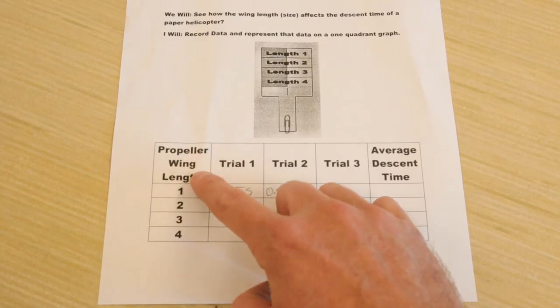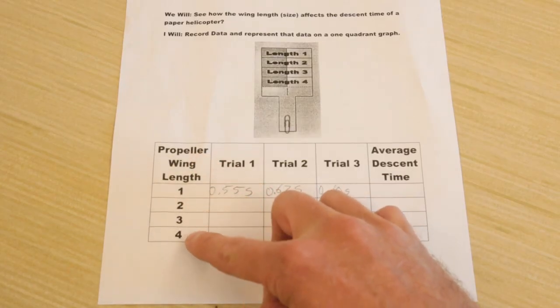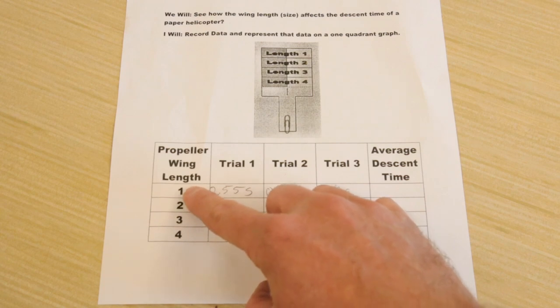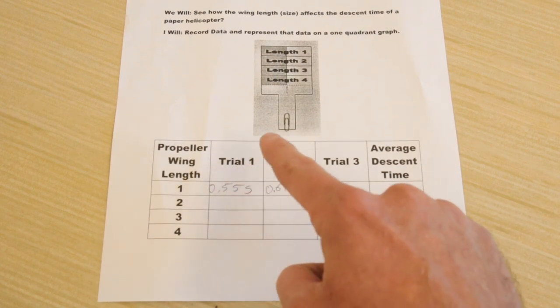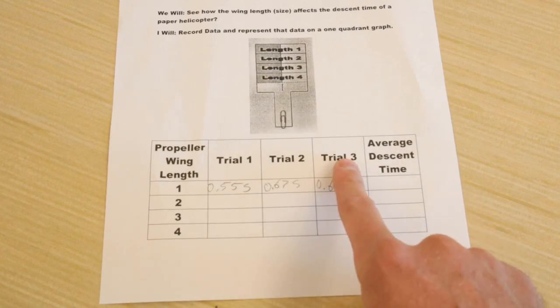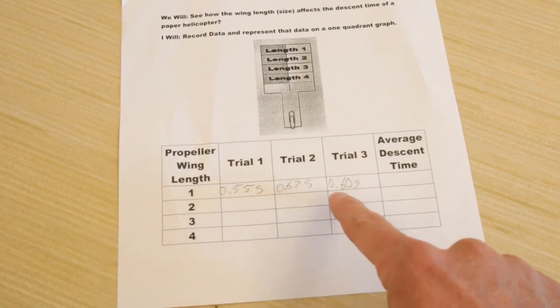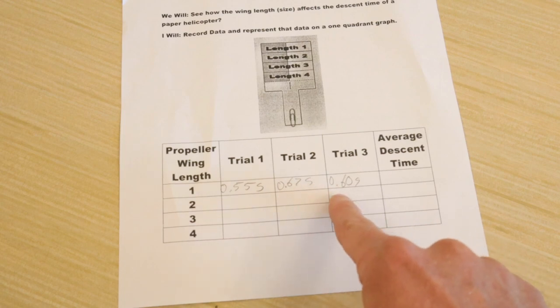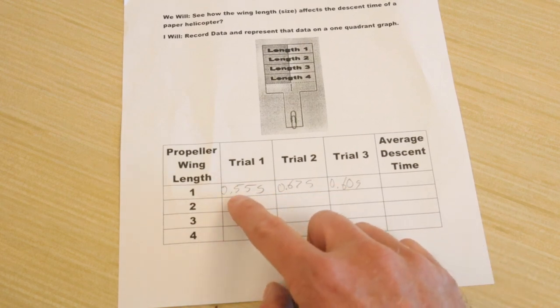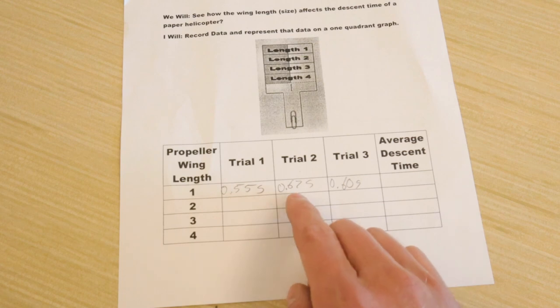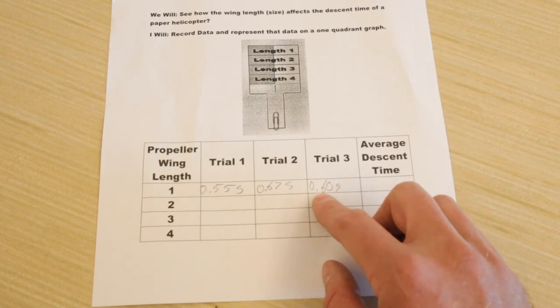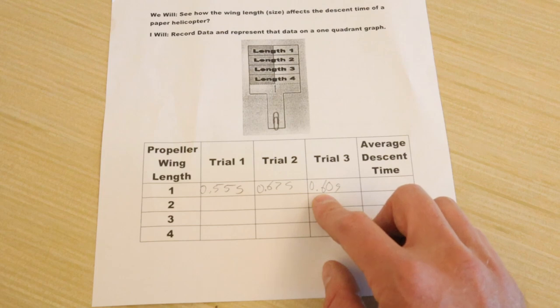So here we have propeller or wing length 1, 2, 3, 4. Like I said, we're going to test wing length 1, 2, 3, and 4 three times. Trial 1, trial 2, trial 3. And then we're going to add these numbers together. You can see I've already collected some data. My first trial, it only took 0.55 seconds. The next one only took 0.67 seconds. And then third trial was 0.60 seconds.